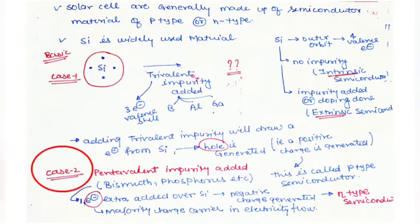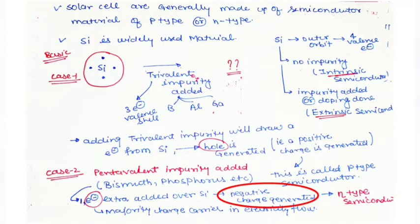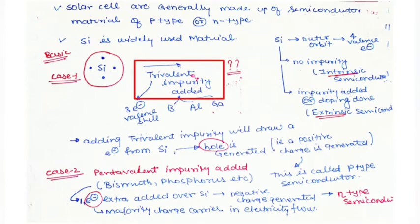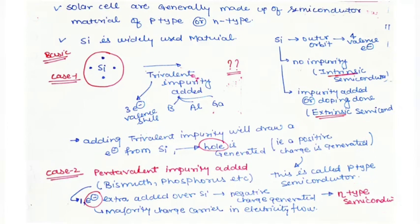Now for Case 2: when pentavalent impurity is added to silicon. Pentavalent impurities include bismuth and phosphorus. When pentavalent impurity is doped with silicon, a negative charge is generated on silicon — an extra electron comes from the pentavalent impurity to silicon. In this case, we get N-type semiconductor. To summarize: adding trivalent impurity gives P-type semiconductor, and adding pentavalent impurity gives N-type semiconductor.